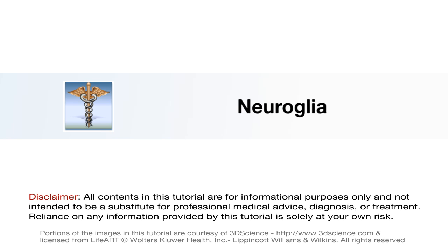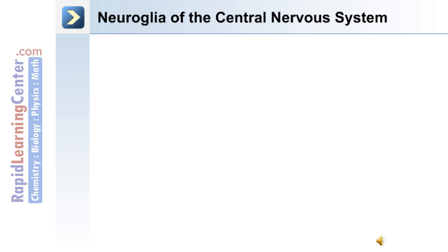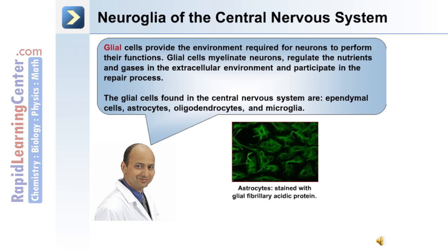Now let's move on to discuss the other major class of cells in the nervous system, the neuroglia, including the neuroglia of the central nervous system as well as the neuroglia of the peripheral nervous system. The neuroglia of the central nervous system.